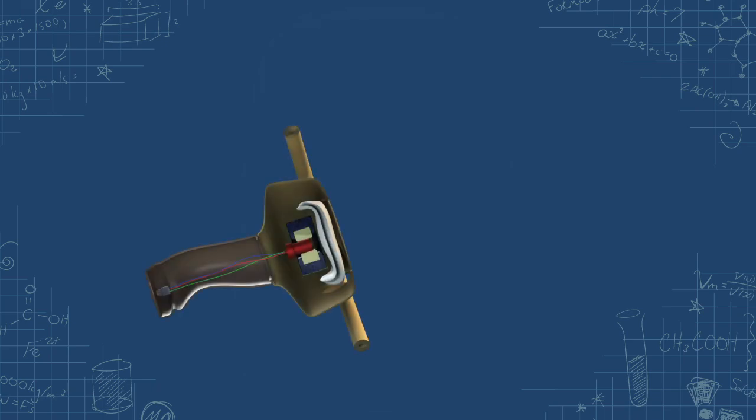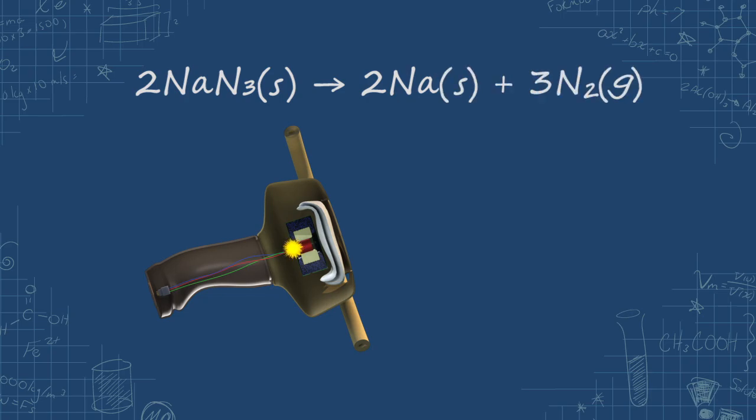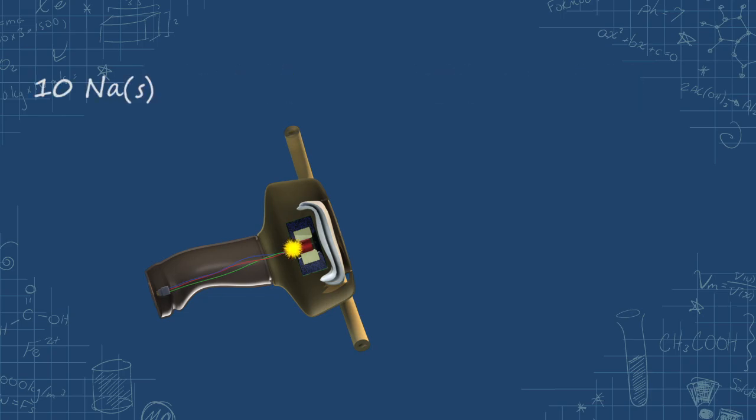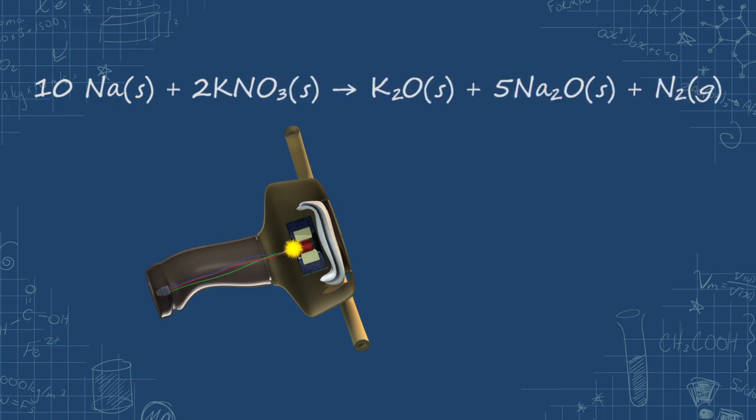When a crash sensor activates, it triggers the igniter in the airbag inflation device. The heat starts a chemical reaction. The sodium azide decomposes to form nitrogen gas and sodium metal. Sodium metal is hazardous, though, so it's combined with potassium nitrate. This reaction forms metal oxides and more nitrogen gas.